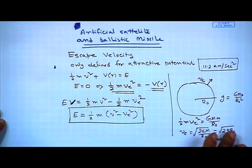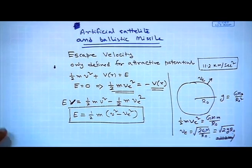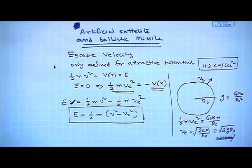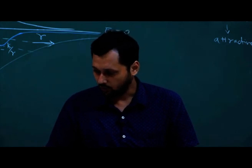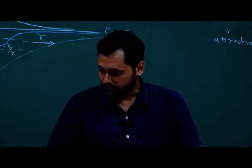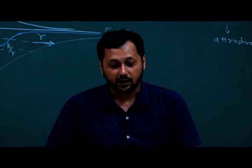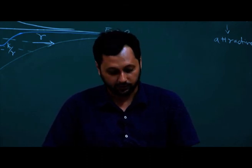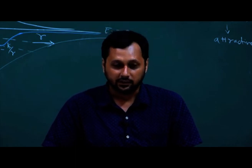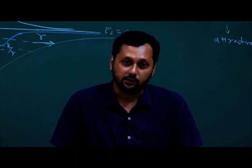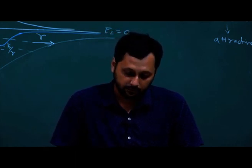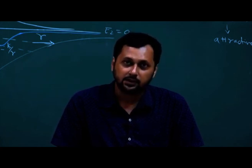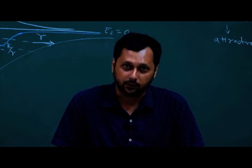This concludes the discussion of escape velocity. After the interval, we will write a different expression for eccentricity, and from there we will see what conditions produce a circular orbit for an artificial satellite, what conditions produce an elliptical orbit, and what determines the range of a ballistic missile. Thank you.